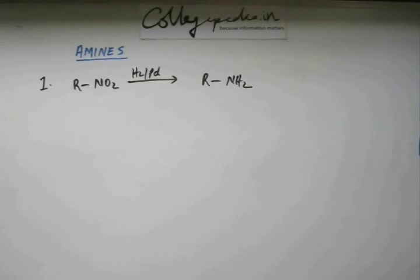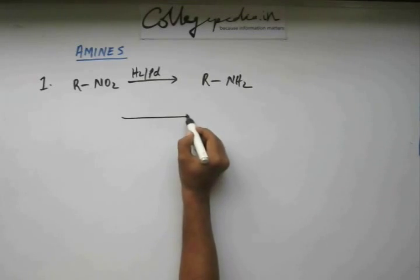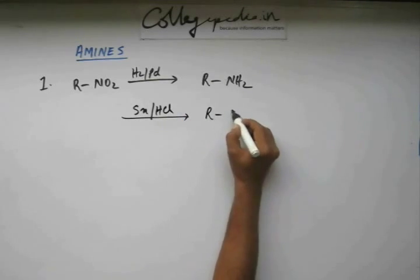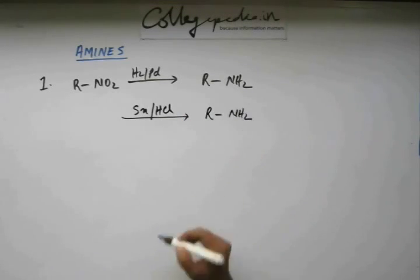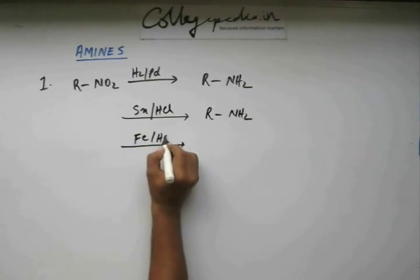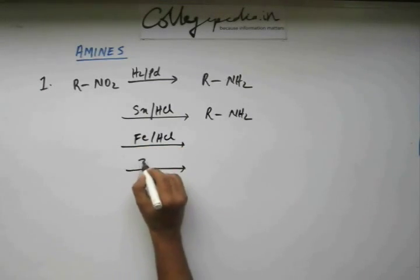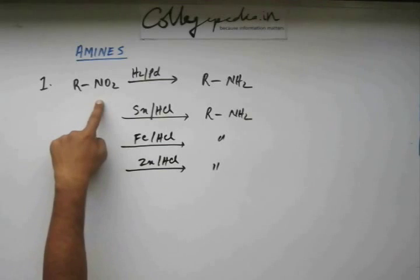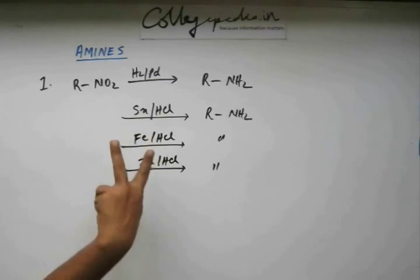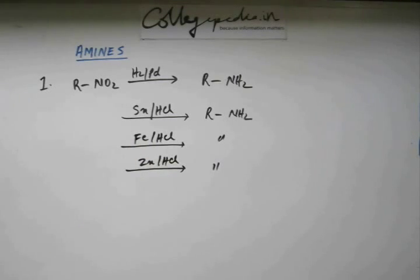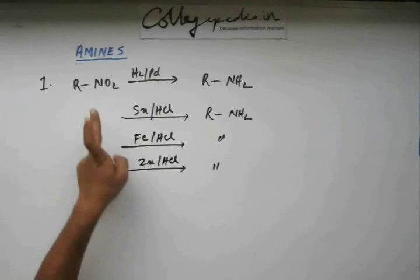Now there are other reducing agents. There could be a metal like tin in presence of HCl that will also give the same final product that is amine. Instead of tin, we can take iron as well or we can also go for zinc. Generally these three metals are taken to give further reduction of nitro group.